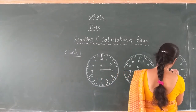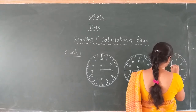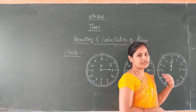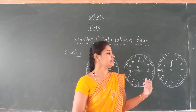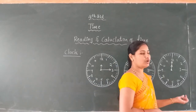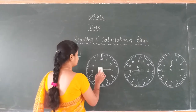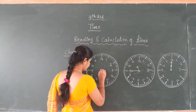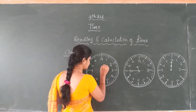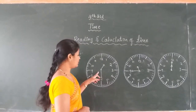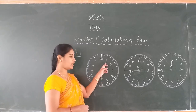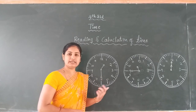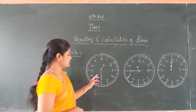Then come to the next clock. Both the minute hand and hour hand are at 12. So this is 12 o'clock. The minute hand is also at 12 and the hour hand is also at 12 — the time is 12 o'clock. Now, when the minute hand is at 6 and hour hand is at 1, we read the time as half past 1.